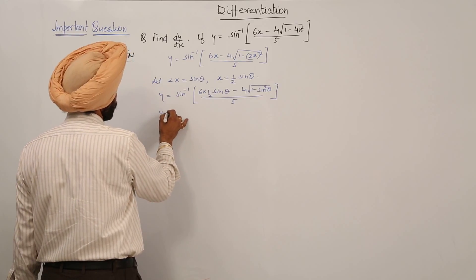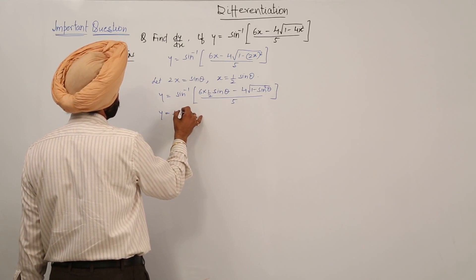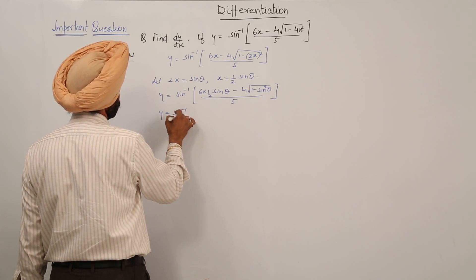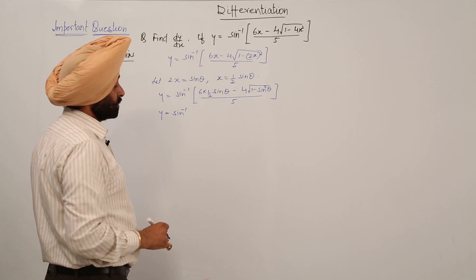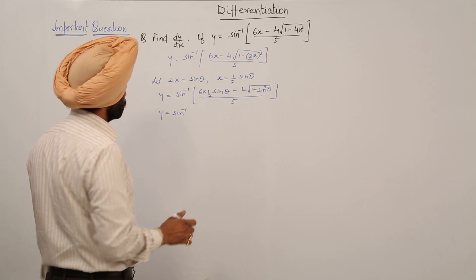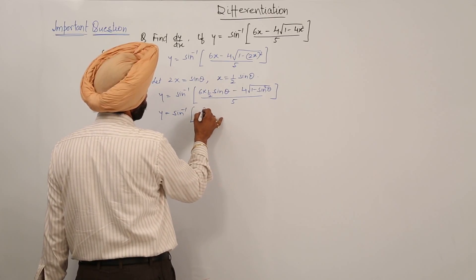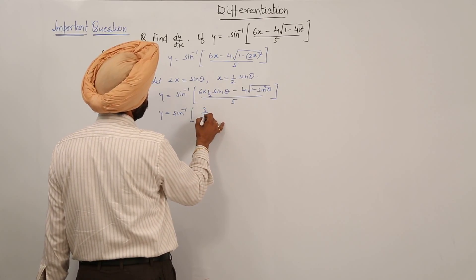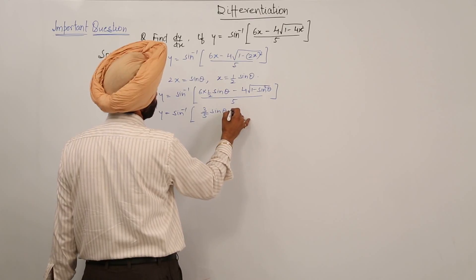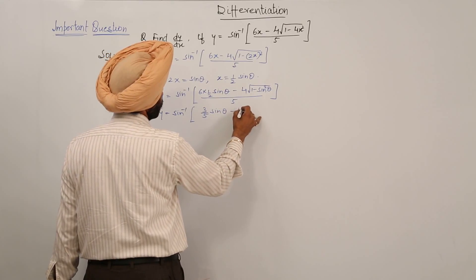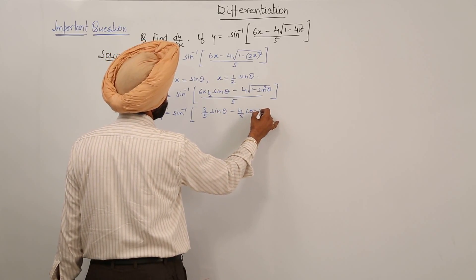This simplifies to y is equal to sin inverse of (3/5 sin θ minus 4/5 cos θ).